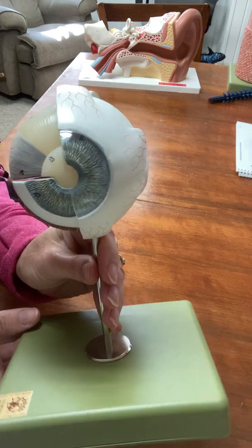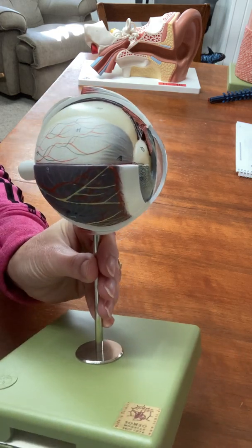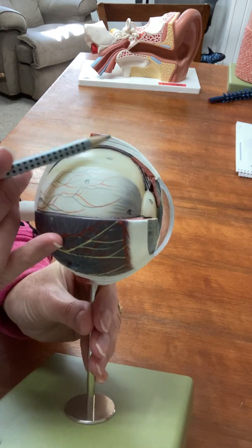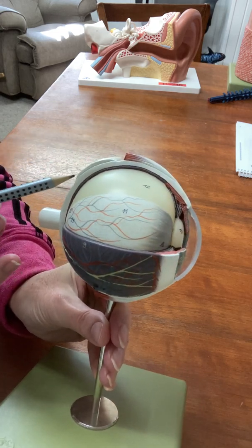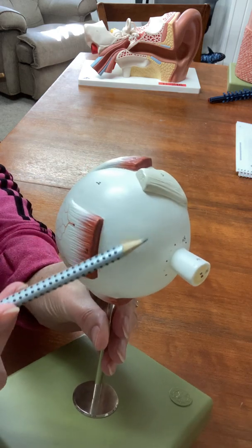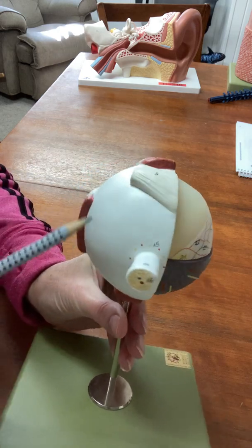Clearly the outermost layer of the eye is this white layer that surrounds almost the entire eye, so all of this is called the sclera.